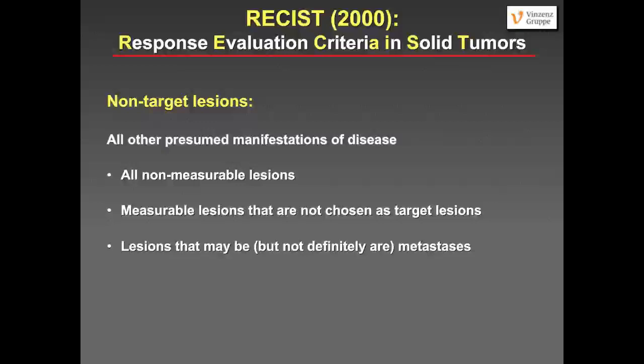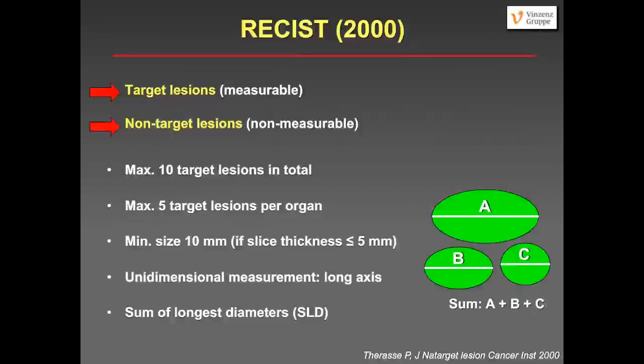Not all measurable lesions can be chosen as target lesions. Lesions highly probable but not definitively metastases can also qualify as non-target lesions. With RECIST, we have target lesions (measurable), non-target lesions (non-measurable or other lesions). In total, a maximum of ten target lesions, with no more than five target lesions per organ to avoid distribution bias. These lesions must be at least ten millimeters in size if the slice thickness of your CT does not exceed five millimeters.